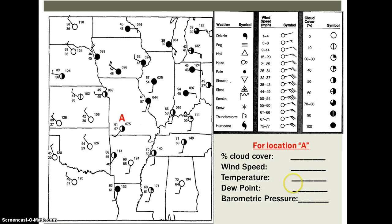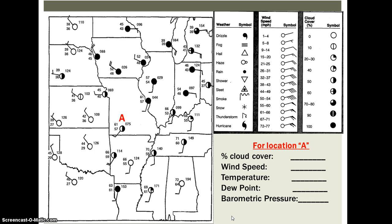Let's apply this. There's a location shown here — Location A. Pause the video and see if you can answer the questions based on what we just covered. You can use the key shown on screen, which shows the different symbols you might see on the map, including the flags for wind speed and the cloud cover symbols that tell you the percentage of sky covered by clouds. Go ahead and pause the video and see what you can come up with.